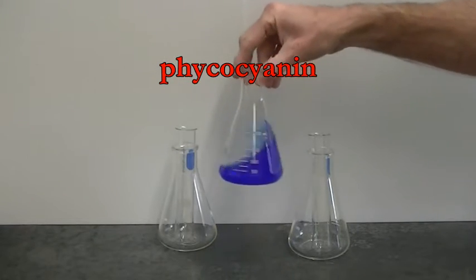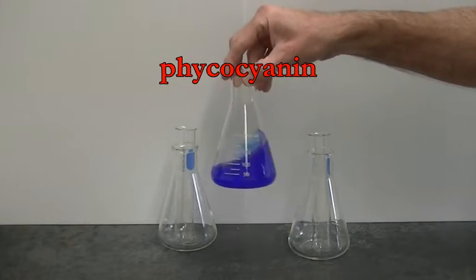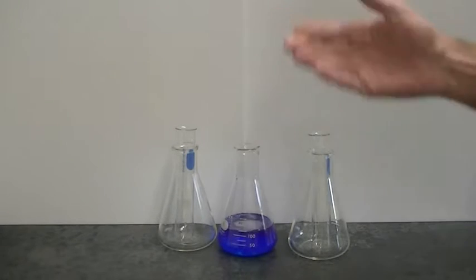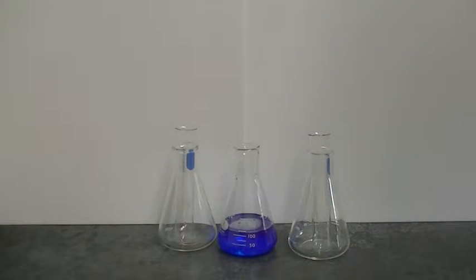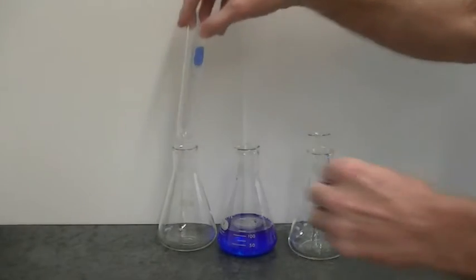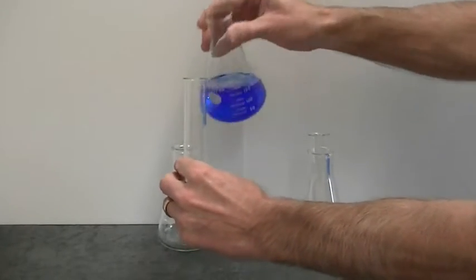Now phycocyanin has a blue color, and that's why this solution has this beautiful blue color. What's interesting is that when the protein is denatured, the blue color is lost, and this provides us with a really easy way to do protein denaturation experiments.